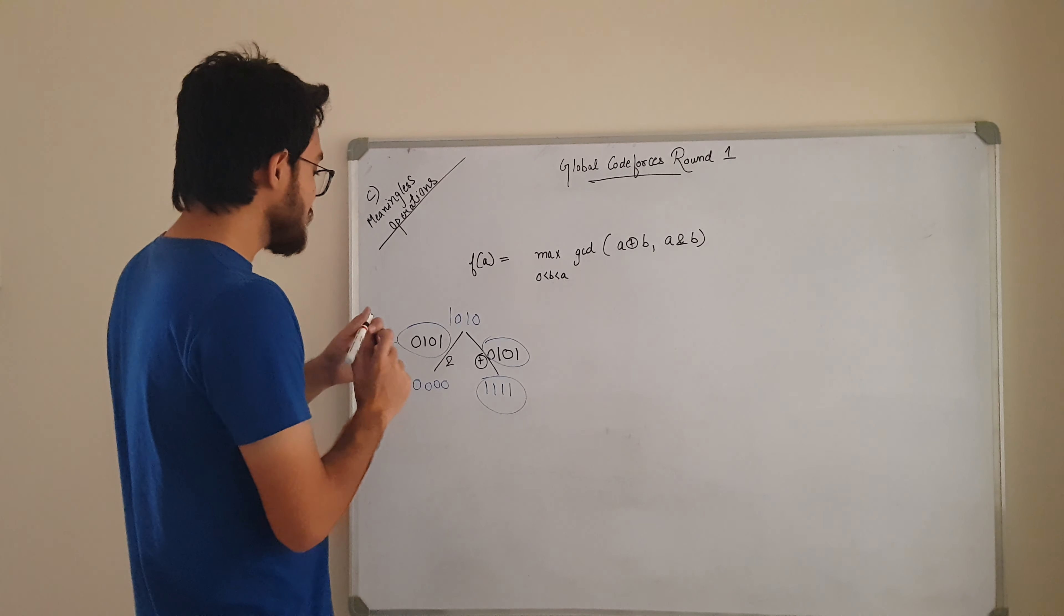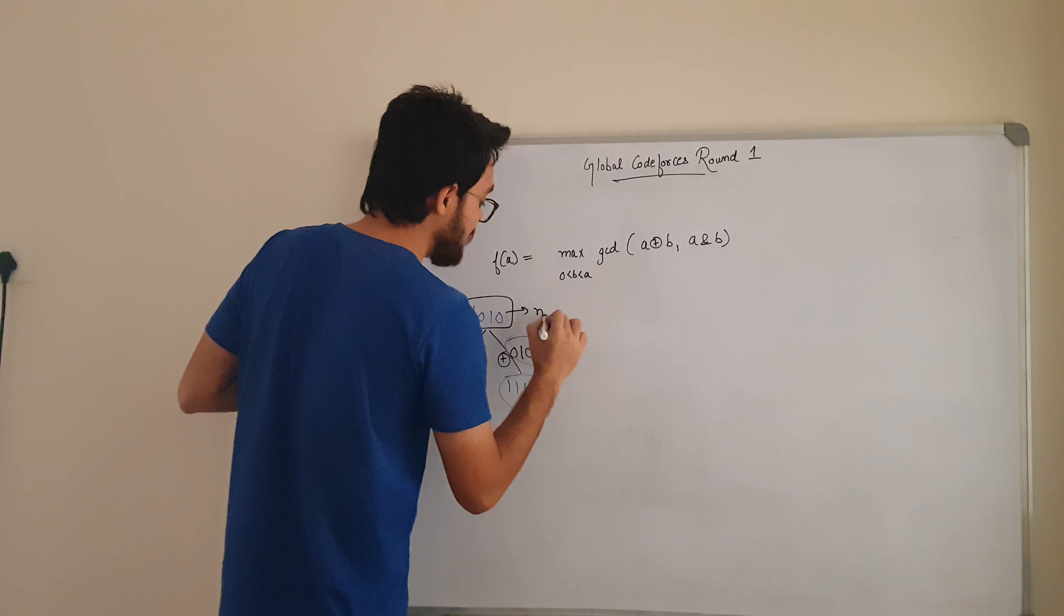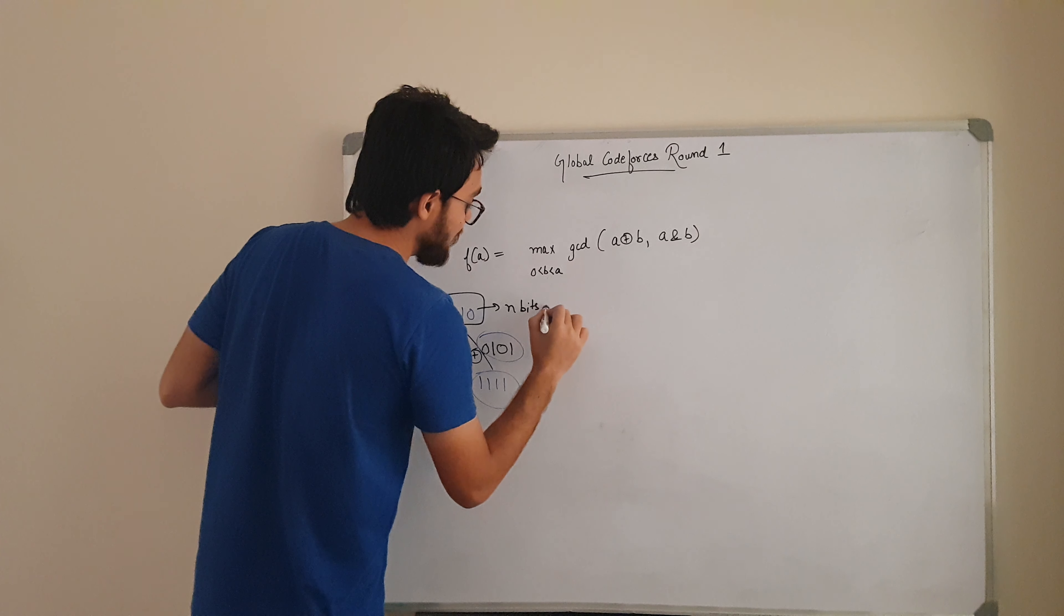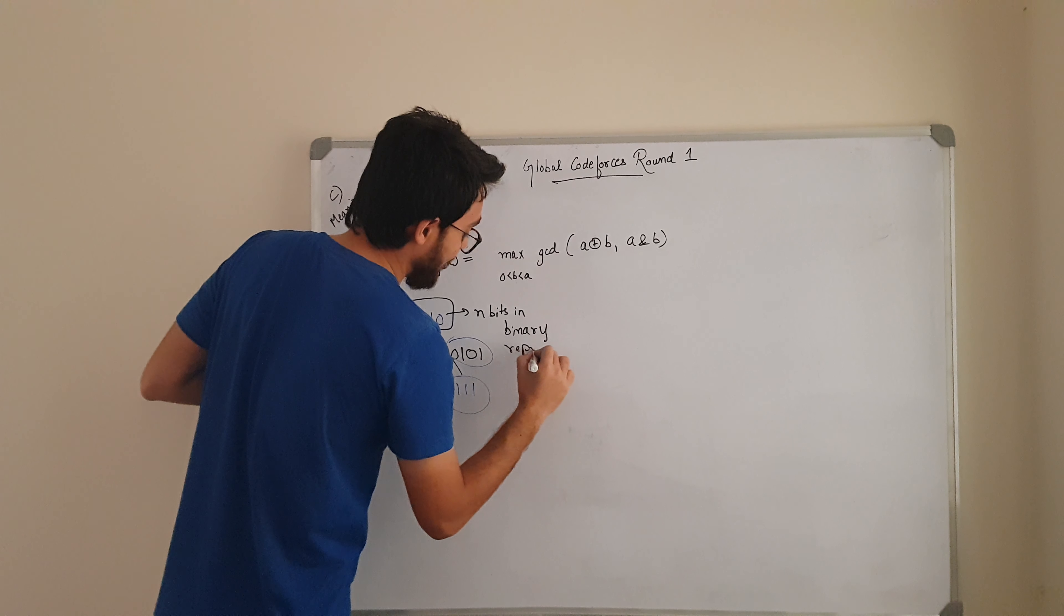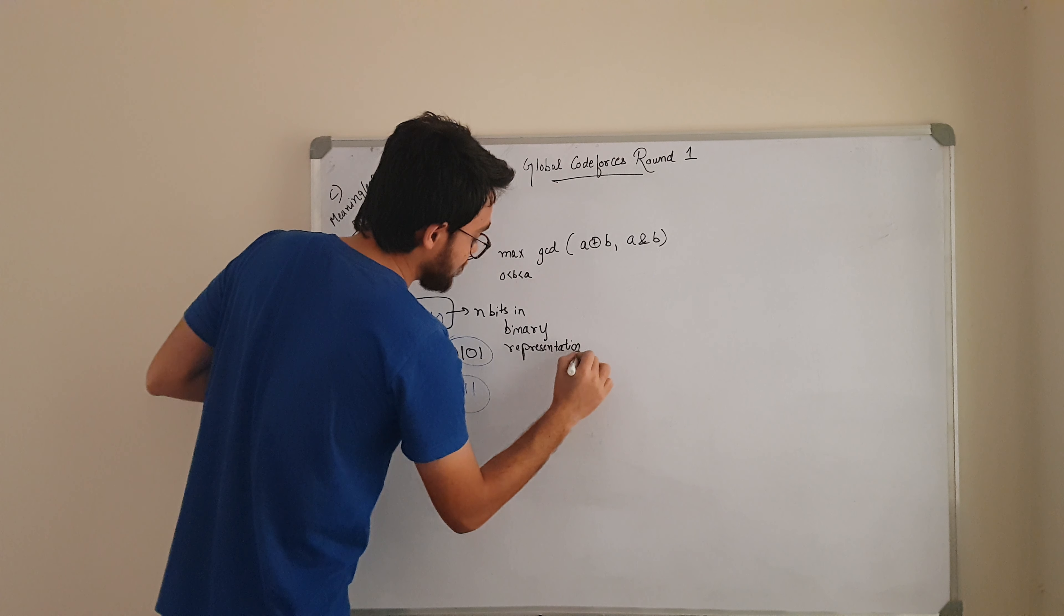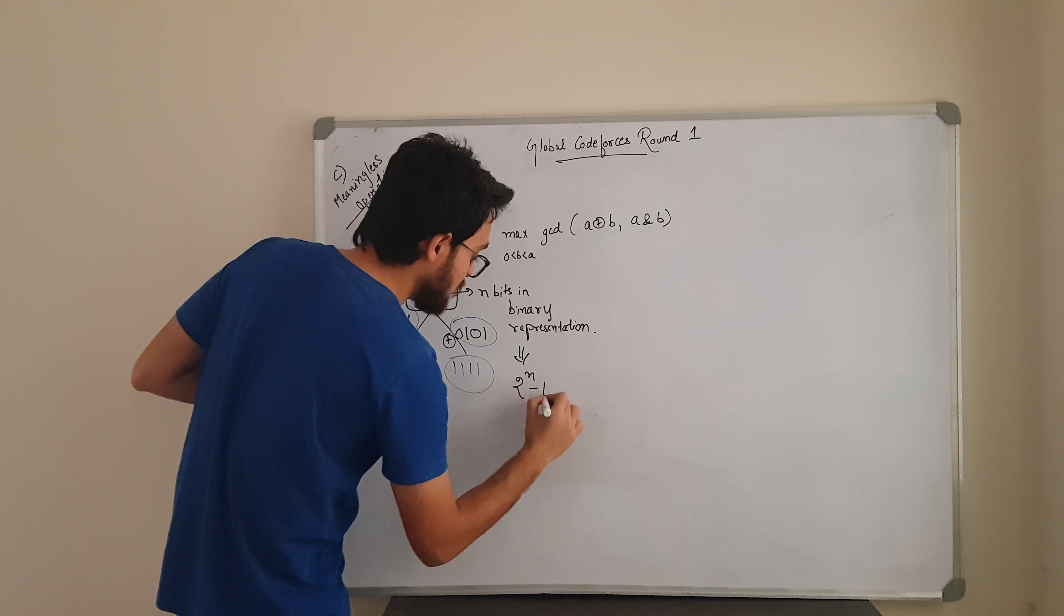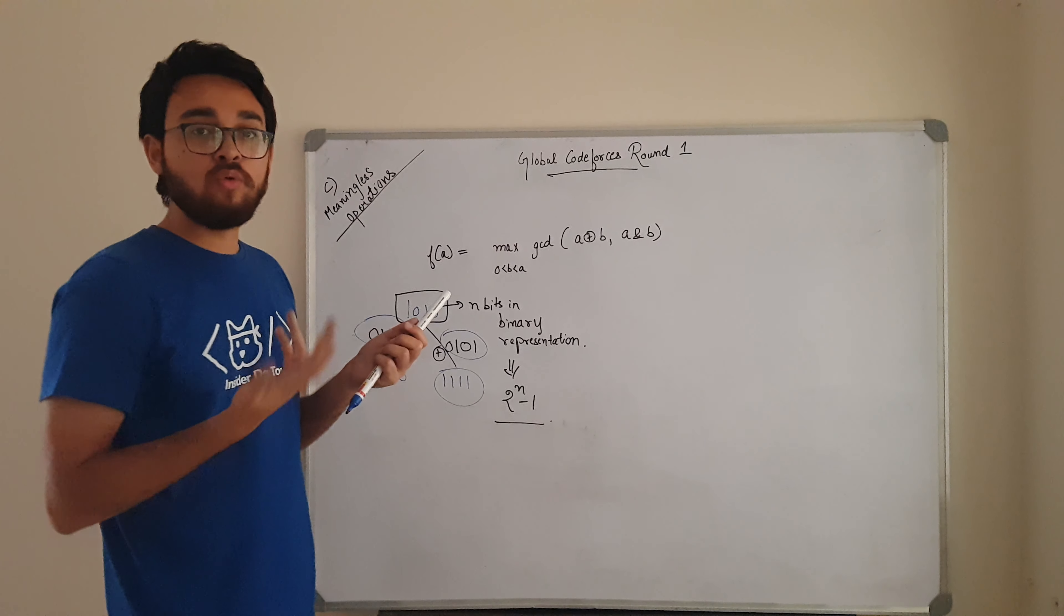So what you can think is, if you have a number like this and it is having n bits in its binary representation, then your answer is going to be 2 to the power n minus 1.